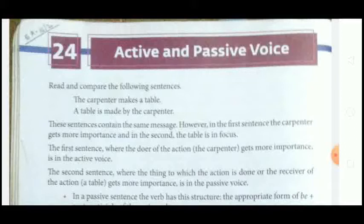Chapter number 24: Active and Passive Voice. Read and compare the following sentences. First: 'The carpenter makes a table.' Second: 'A table is made by the carpenter.' Here the subject has changed, but the meaning of the sentence is the same. In the first sentence, the subject is 'carpenter,' while in the second sentence we used 'a table' as the subject.